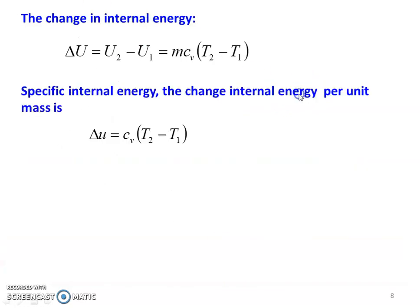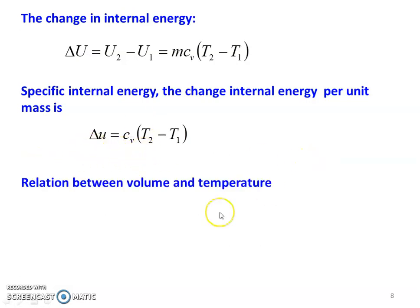The change in internal energy for the isobaric process: ΔU = U2 − U1 = MCv(T2 − T1). The specific internal energy, which is the change in internal energy per unit mass, is: Δu = Cv(T2 − T1). Since pressure is constant, the relation between volume and temperature is: V1/V2 = T1/T2, or V2/V1 = T2/T1.